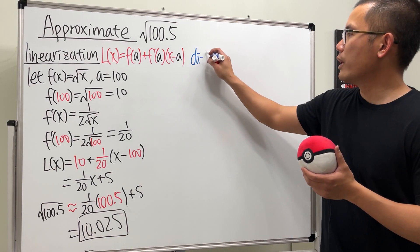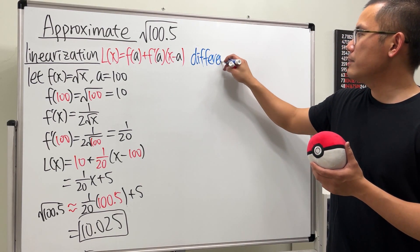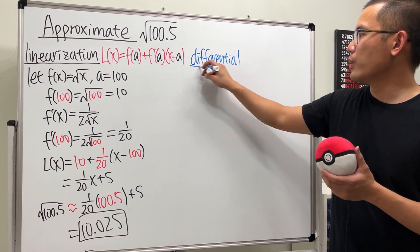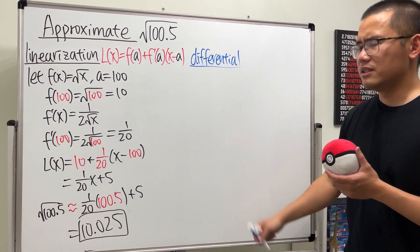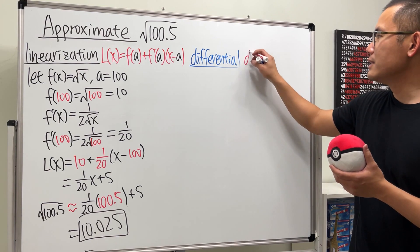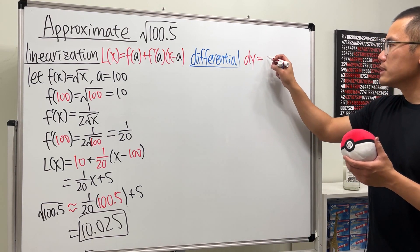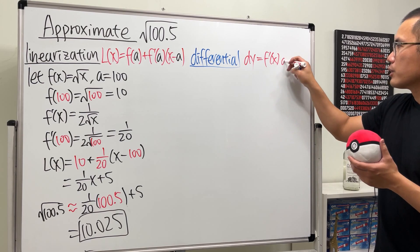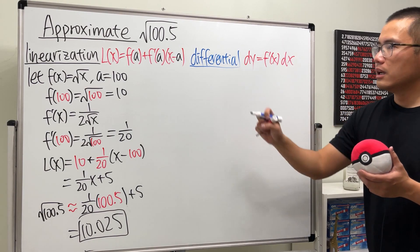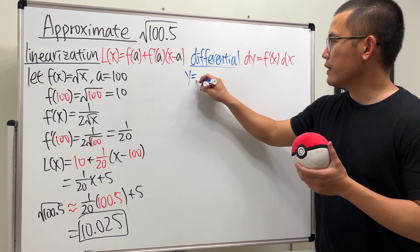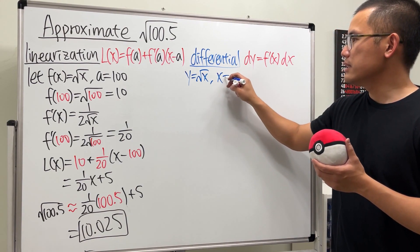Okay, second way, differential way. And of course, on the exam, you can just pick one of these ways to do it. Perhaps this right here is easier. I don't know. You guys, let me know. dy equals the derivative of the function multiplied by dx. Take y to be square root of x, and then x is at 100.